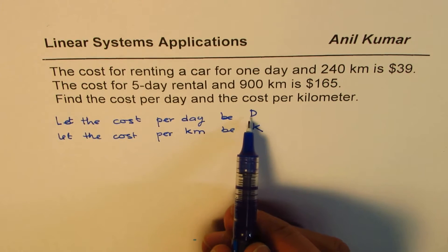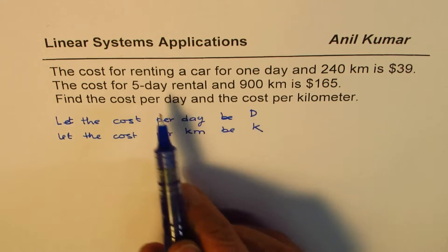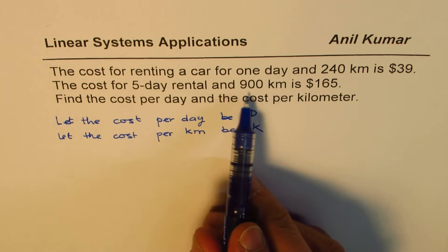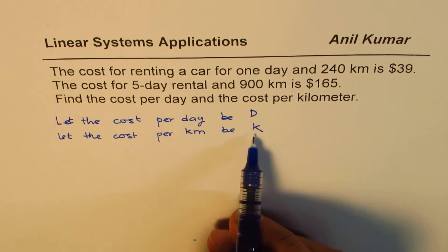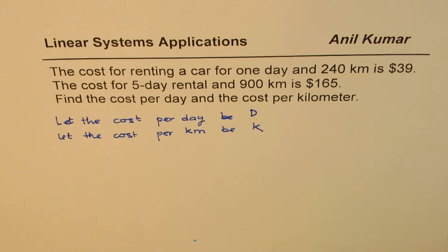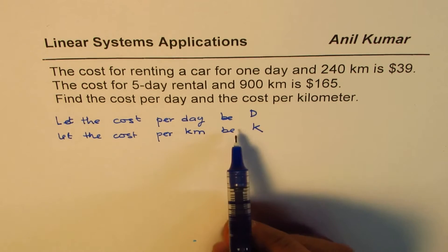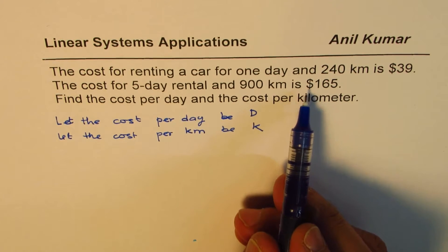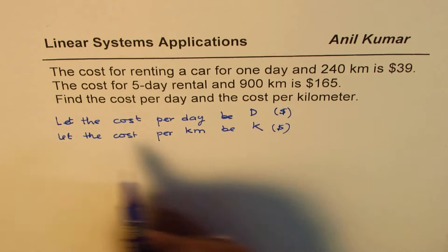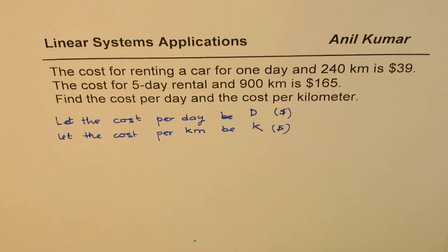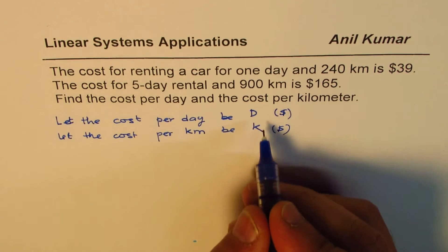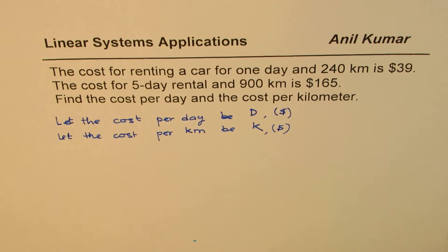So D is my cost per day and K is cost per kilometer. If I rent the car for five days, then the cost will be 5D. If I run 900 kilometers, then the cost will be K multiplied by 900. And the units for the cost will be dollars. You may or may not specify units when you define your variables. It's always better to define the units also.